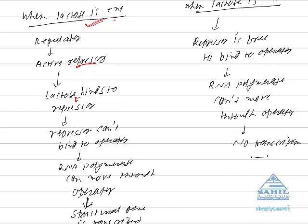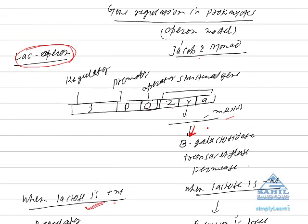So operator remains free. RNA polymerase binds to promoter and can move through operator because the site is free. As a result, structural gene is transcribed and enzyme synthesis takes place.